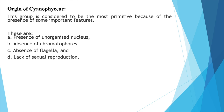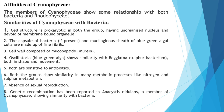Affinities of Cyanophyceae with bacteria: Both have prokaryotic cell structure — an unorganized nucleus devoid of membrane-bound organelles. The capsule of bacteria and the mucilaginous sheath of blue-green algae are both made up of fine fibrils. The cell wall of both is composed of mucopeptide (murein). Oscillatoria shows similarity with Beggiatoa, a sulfur bacterium, both in shape and movement. Both groups are sensitive to antibiotics.